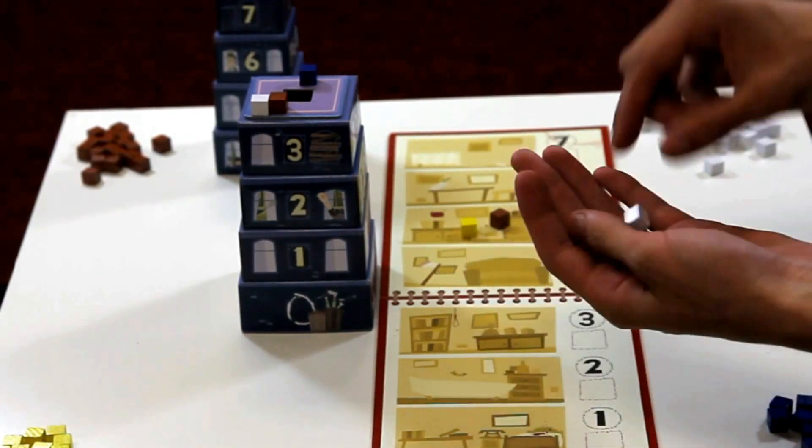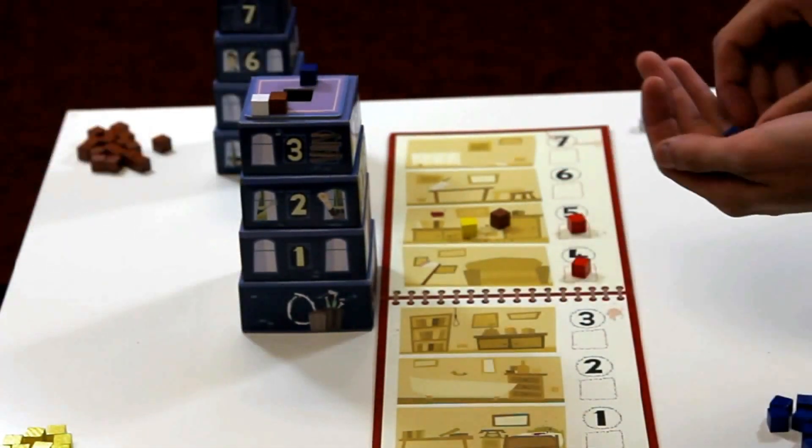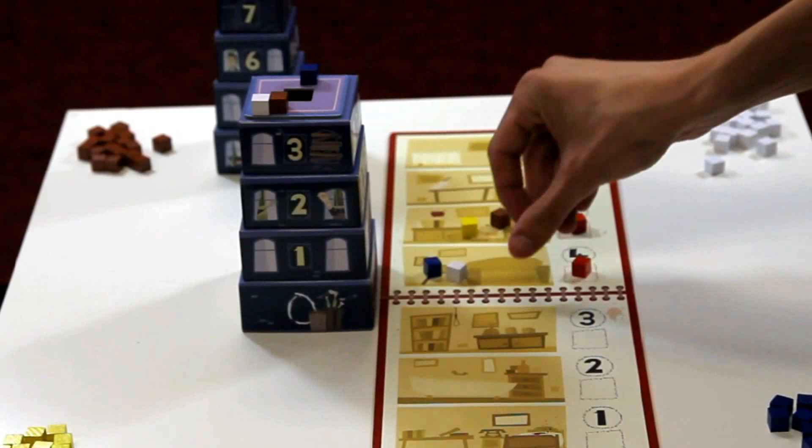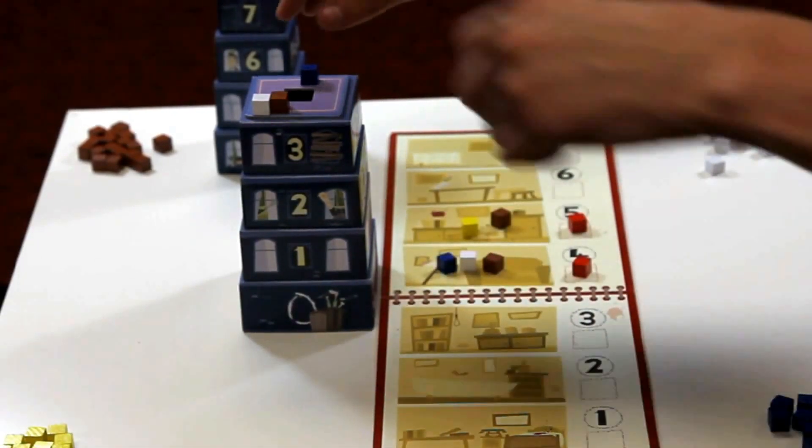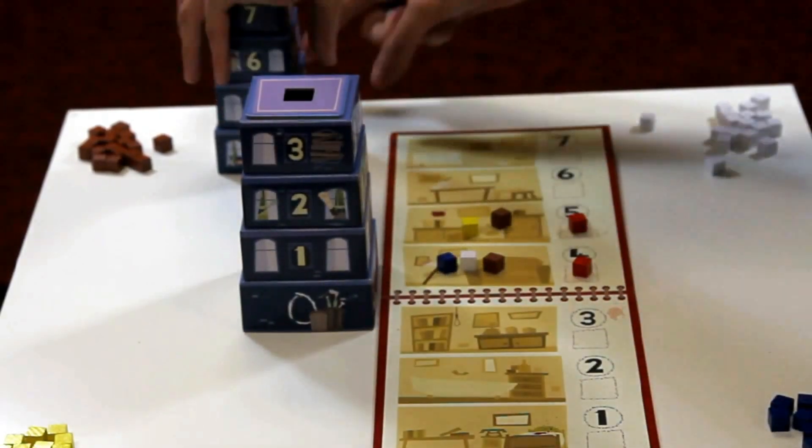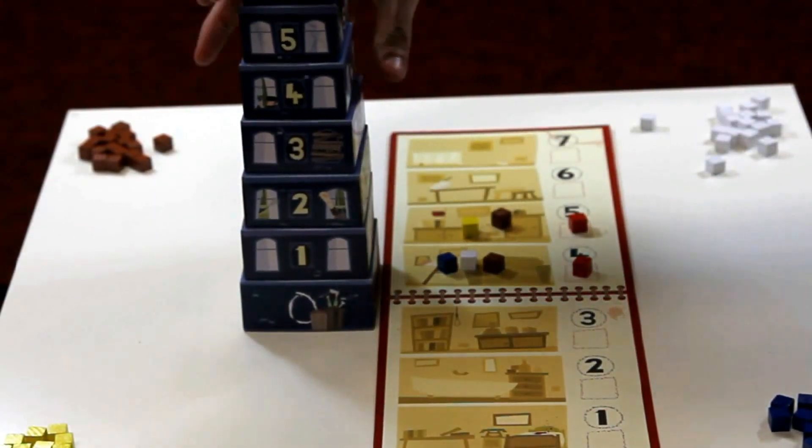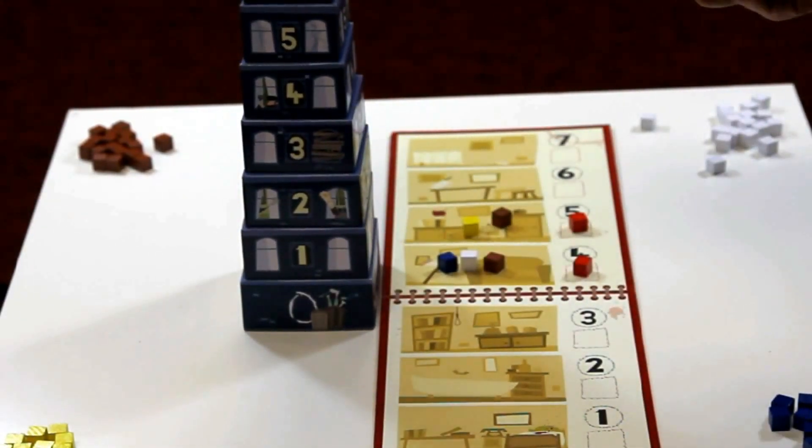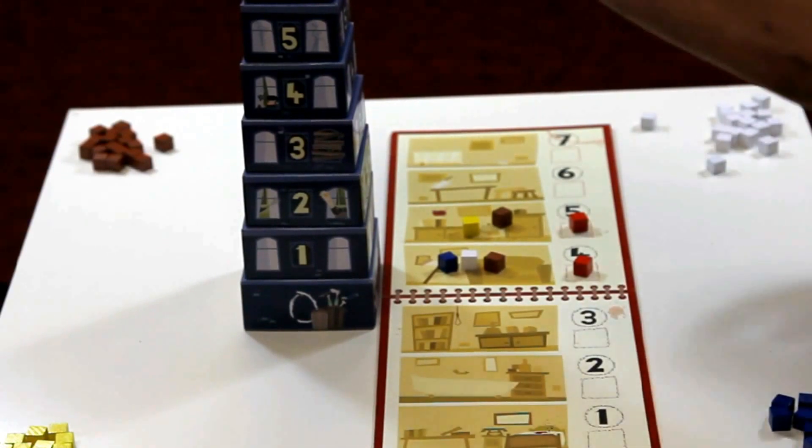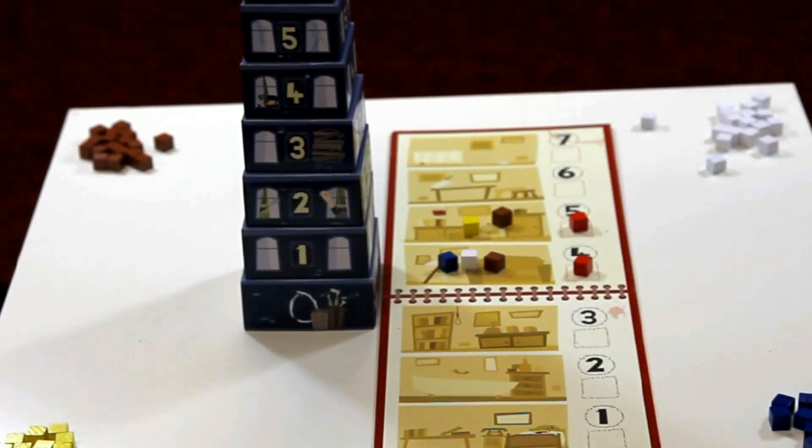The blue, white, and brown players now all add a clue onto the second body's floor. The revealed cubes are re-seeded into the tower. And now we're ready to begin phase 2.